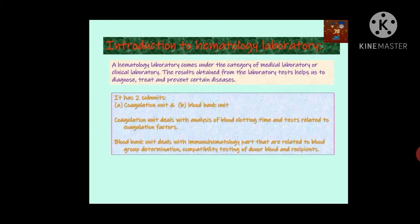Each and every hematological laboratory has two subunits. Number one is the coagulation unit and number two is the blood bank unit. The coagulation unit deals with blood clotting times and tests related to coagulation factors. We have clotting factors in our body which help blood to clot when it is shedding out. If blood is shedding and not stopping, it may be due to some problem in the coagulation factors, and that is dealt with in the coagulation unit.